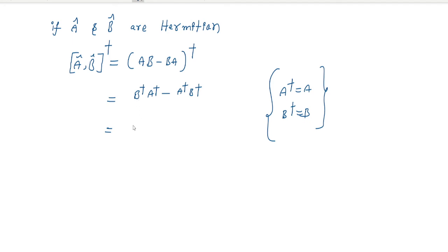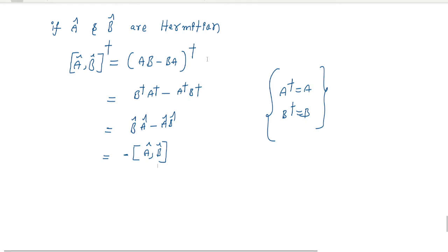So in place of B dagger I am using B, and in place of A dagger I am using A, giving B A minus A B, which equals minus [A, B]. Therefore, the commutator of A and B is anti-Hermitian.